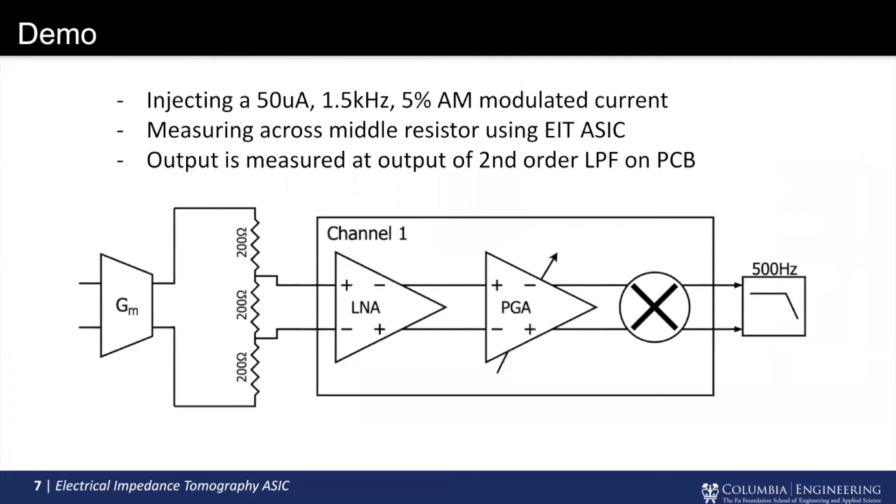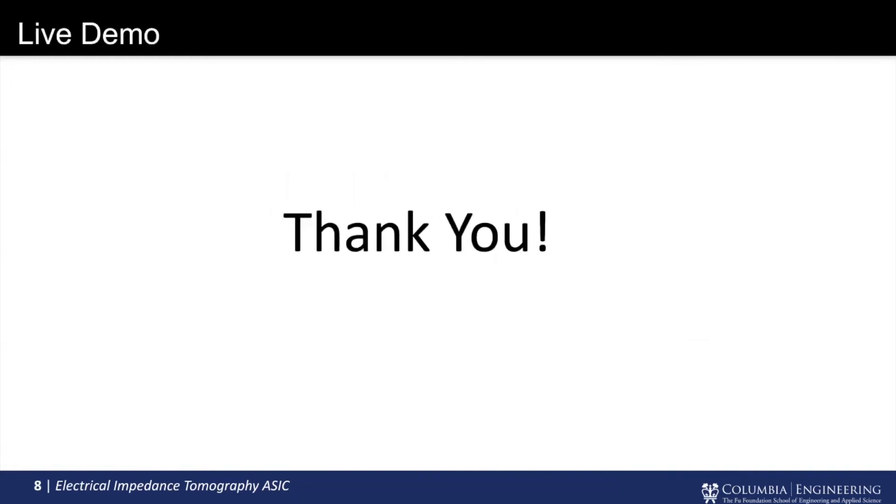So for our demo, in order to show that our chip works, what we'll be doing is we'll be stimulating across three 200-ohm resistors with a 50 microamp, 1.5 kHz, 5% AM-modulated current to model those resistivity shifts. And then we're going to be measuring across the middle resistor with one of our channels, with the LNA and the PGA gain set to 16 volts per volt mixed. And then we're going to measure the output of our low-pass filter.